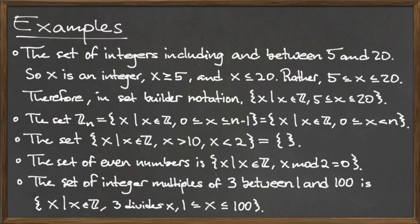In set builder notation, we would say {x | x is in Z, and x mod 2 = 0}.